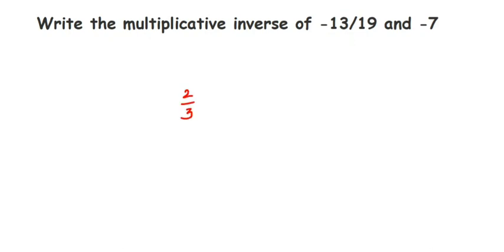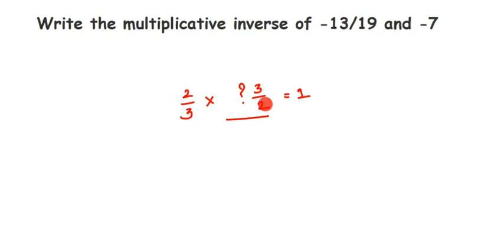Let's take the example of 2 by 3. What should we multiply with 2 by 3 to get the answer 1? Here, 1 is the multiplicative identity. The answer is the reciprocal of 2 by 3, which is 3 by 2. If you multiply 2 by 3 with 3 by 2, you will get 1.